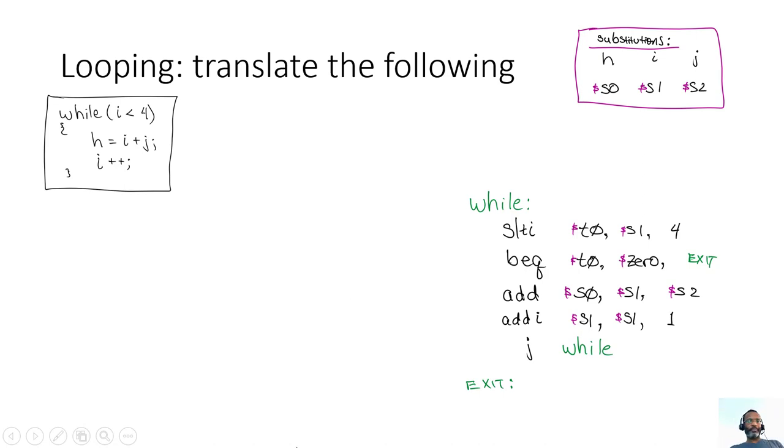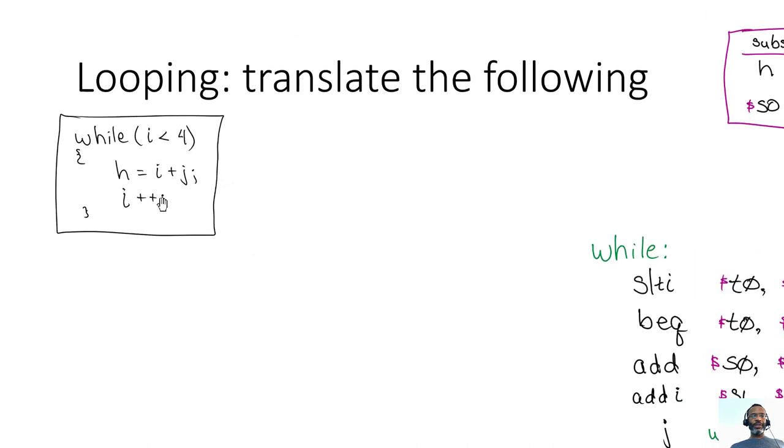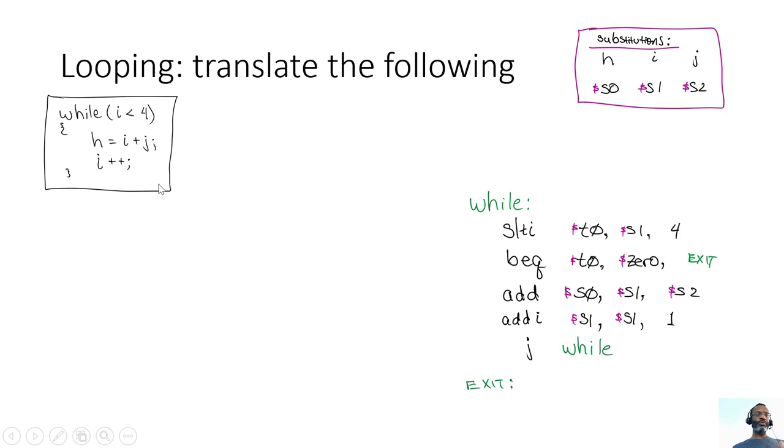Here we have something we're looking at. We want to translate: while i is less than four, do a couple of simple operations. This will be easy to do in MIPS. And if it's not less than, then we want to bail out and get out of the loop.